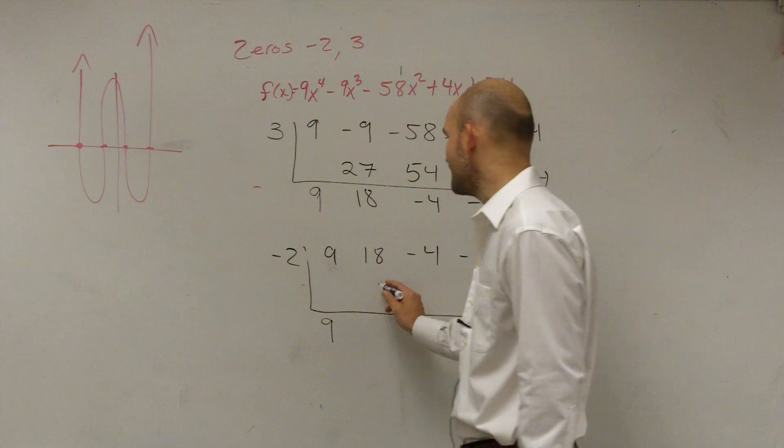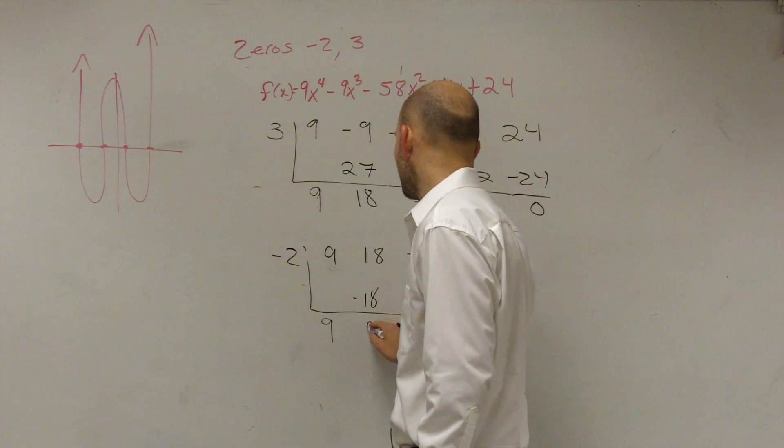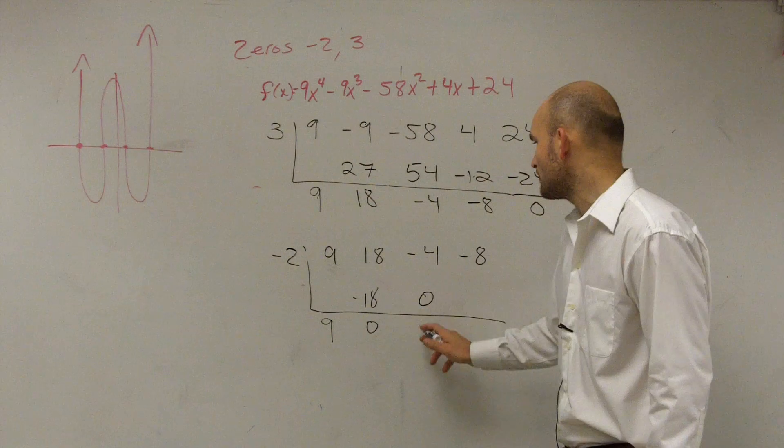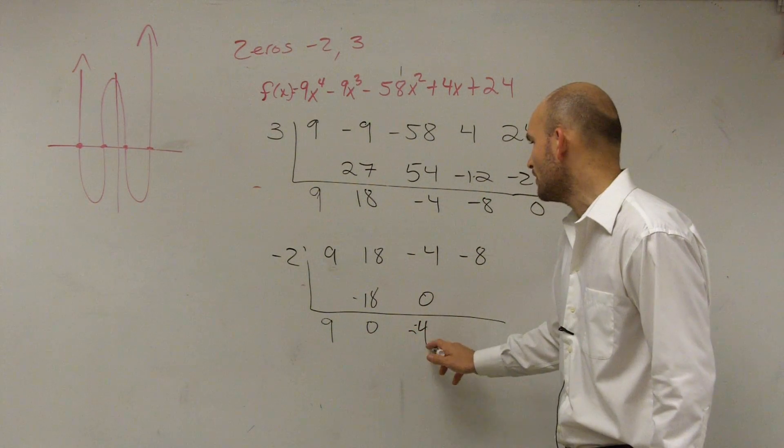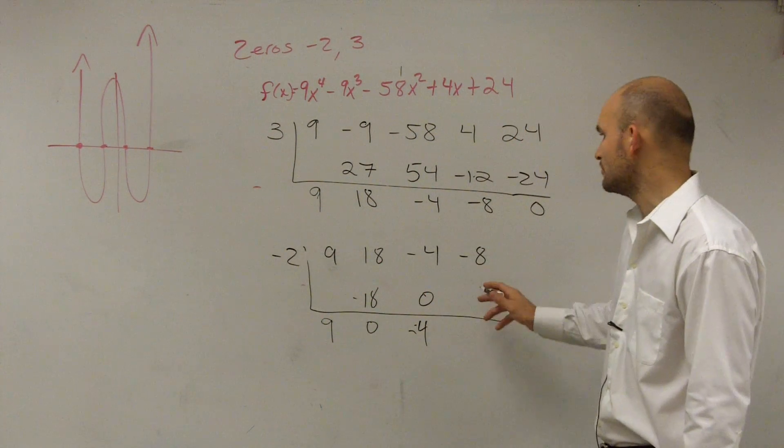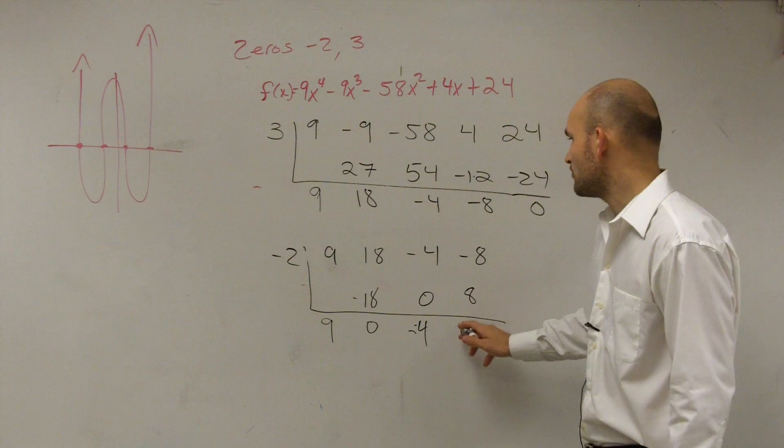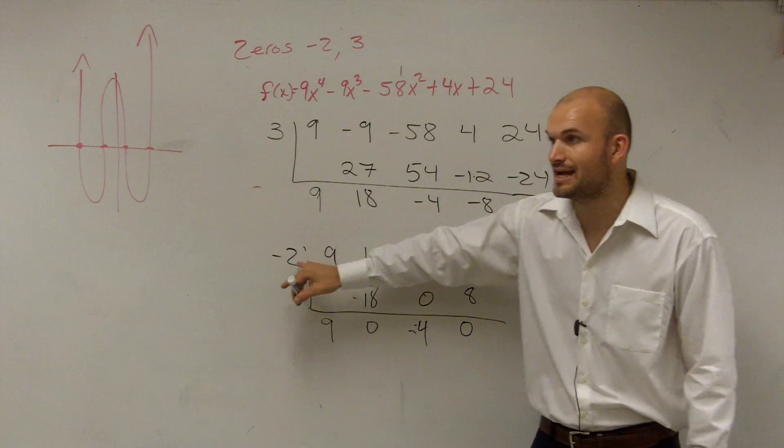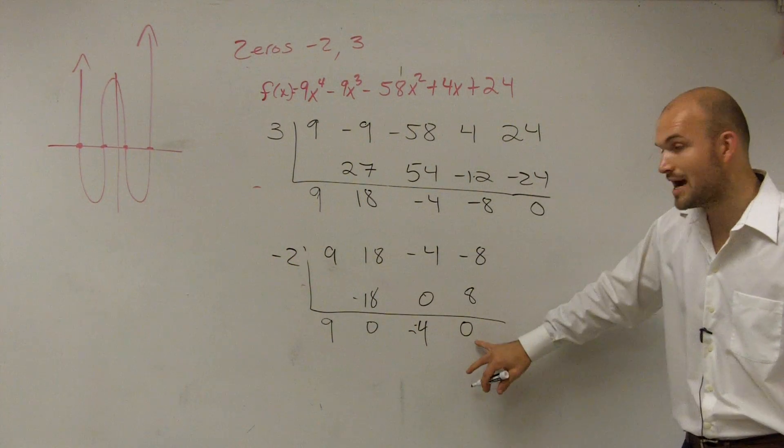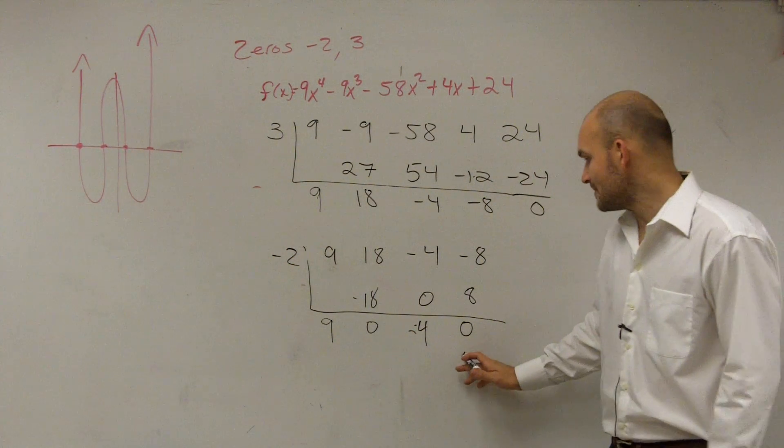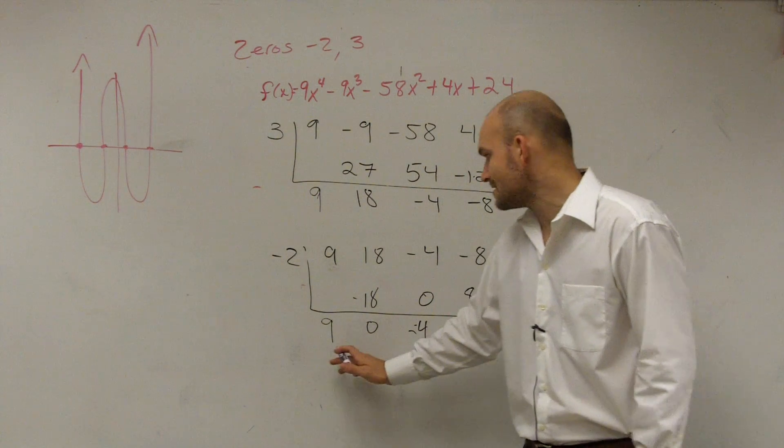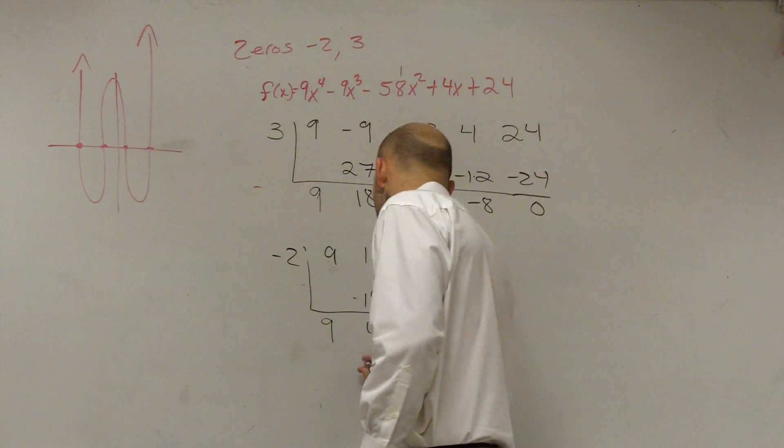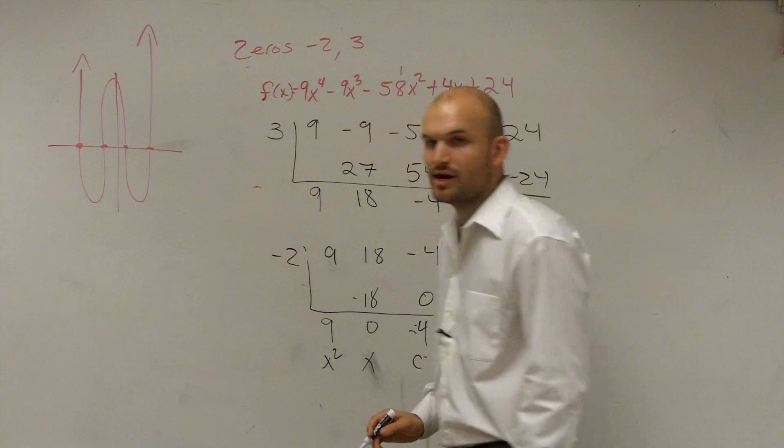9. Negative 2 times 9 is negative 18. Add them up, you get 0. 0 times negative 2 is 0. Negative 4 plus 0 is negative 4. Negative 4 times negative 2 is going to be a positive 8. Bring them down in 0. So again, I got another remainder 0. Does that tell me negative 2 is a zero? Yes, it does. So now I have a remainder 0. So that's my zero. Here's my constant, and then here's my x linear term. And here's my squared term.